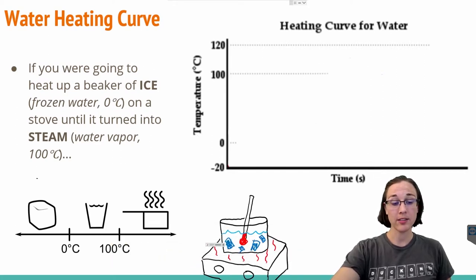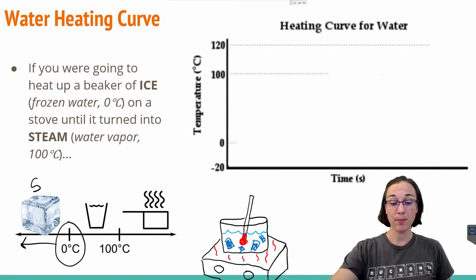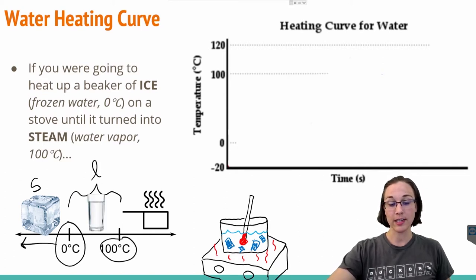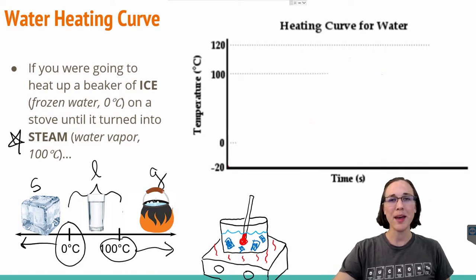We know that water in its solid state, or ice cubes, is anywhere from 0 degrees Celsius and lower. We know that between 0 and 100 degrees Celsius water is a liquid, and anything greater than 100 degrees Celsius water ends up being a gas or steam, also known as water vapor.